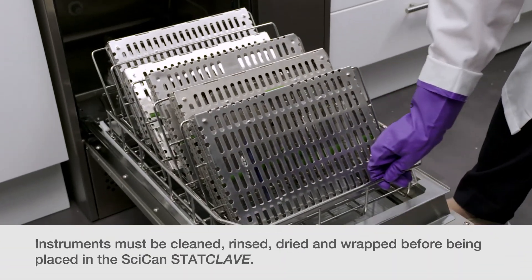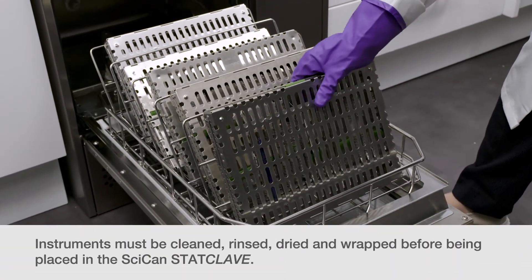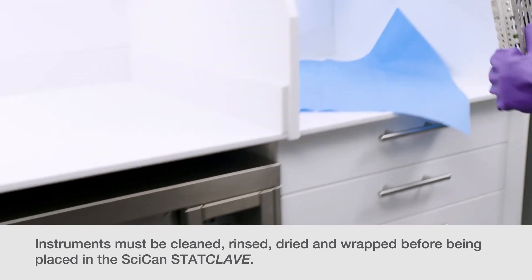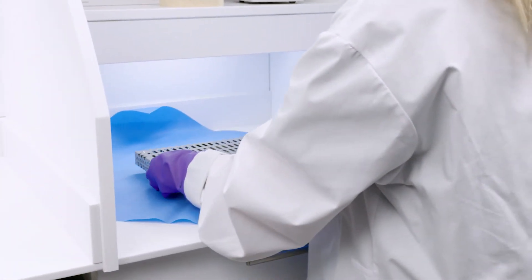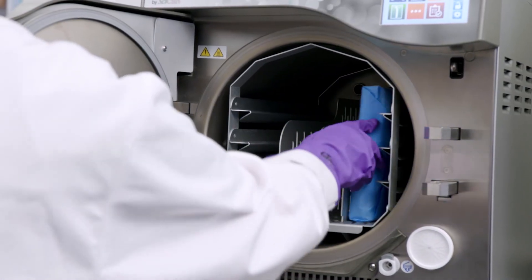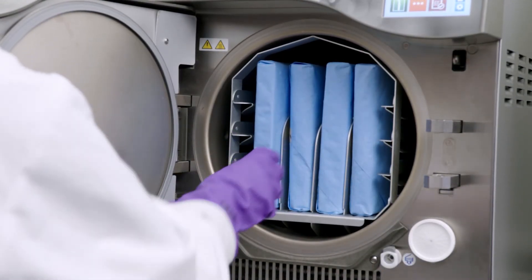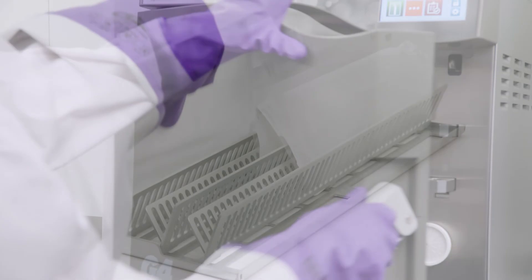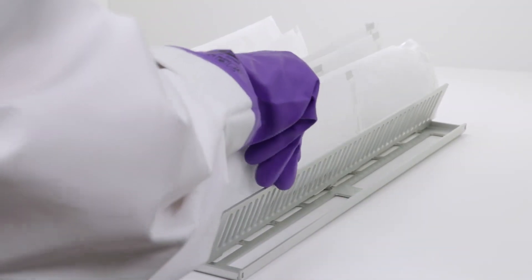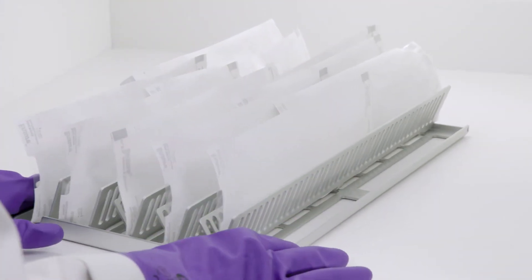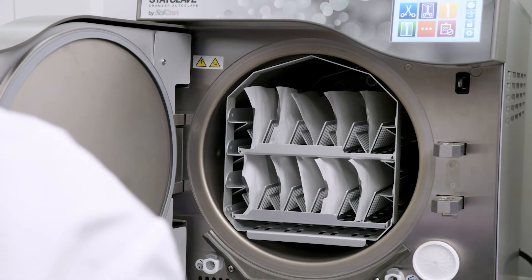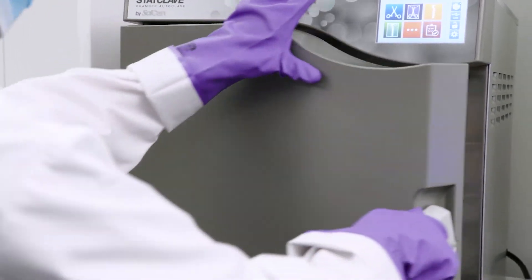Instruments must be cleaned, rinsed, dried and wrapped before being placed in the StatClave. The StatClave should be placed in the unit vertically, ensuring the drying plates have been inserted. When using pouches, pouches should be placed paper side down on the pouch racks provided with the unit. Place the cassettes or pouches in the chamber and close the door.